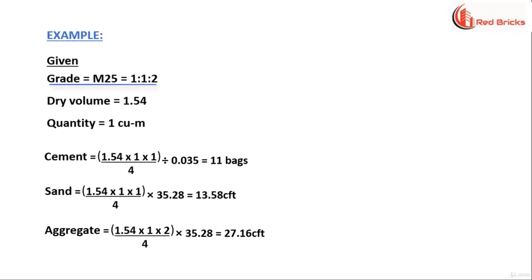Given grade is equal to M25 and its ratio is 1 is to 1 is to 2. Its dry volume is 1.54 and its quantity is 1 cubic meter. So, the quantity of cement is equal to 1.54 into 1 into 1 divided by 4 whole divided by 0.035